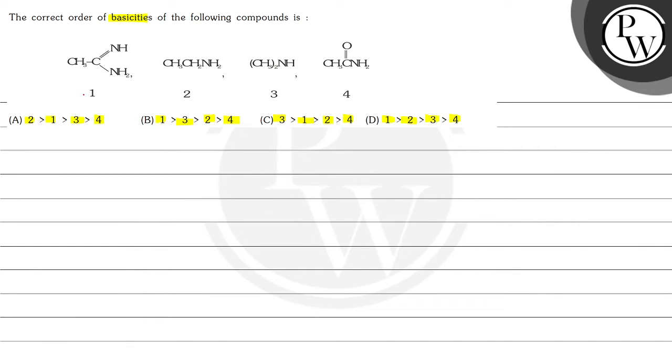Here these are the four compounds are given. We will write these compounds one by one. Firstly we will write key concept. In this we have to find out the order of basicities. We know that basicity is directly proportional to the electron donating tendency.